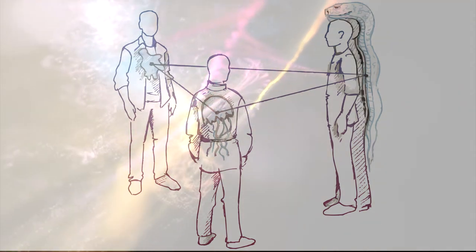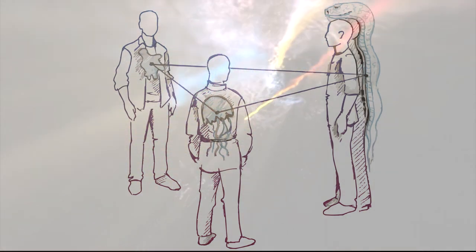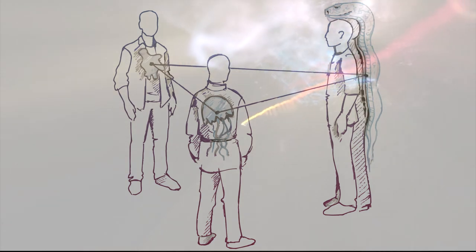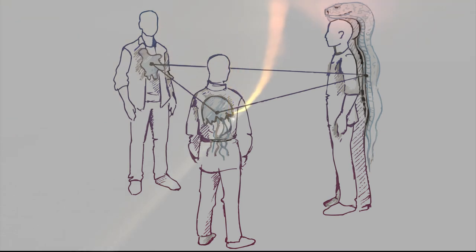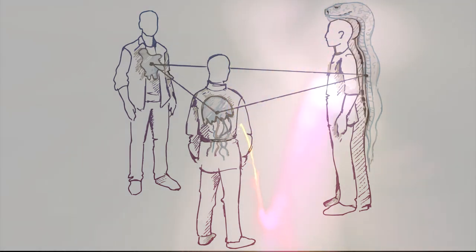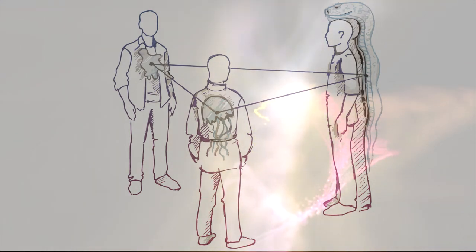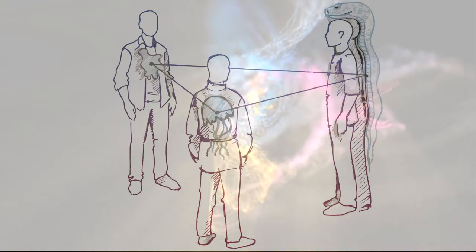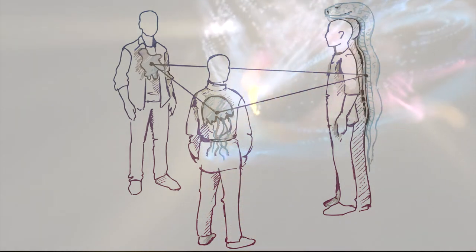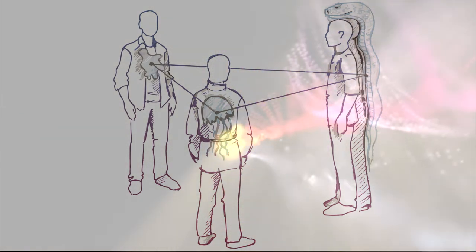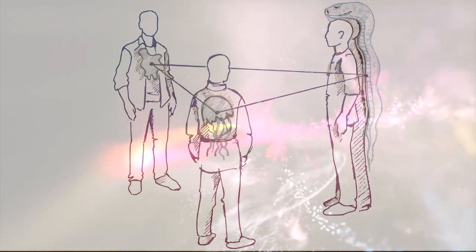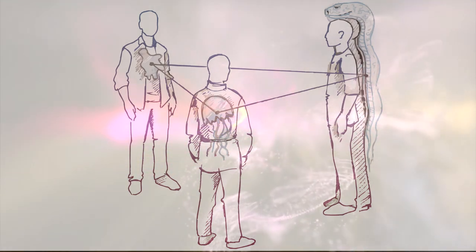Such large larvae eventually completely take control of a person's consciousness. When a person's consciousness is completely under the control of the larva, then if his work was associated with working with his hands, the larva begins to bring clients. For example, a hairdresser works with hair — through the hair, the larva hooks up to others and then leads them to the same master to feed on their energy as well. If a person's work is intellectual, they change their place of work because they are no longer able to think independently.